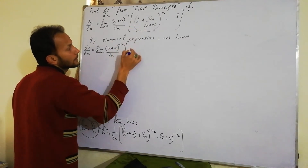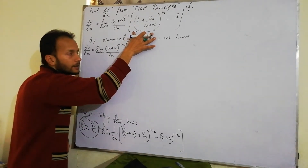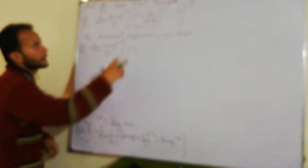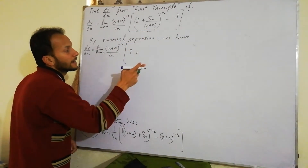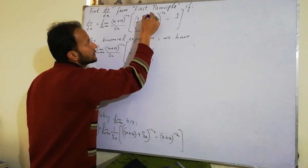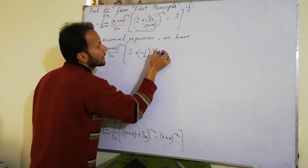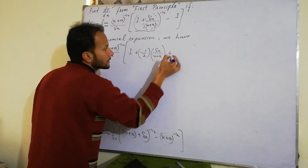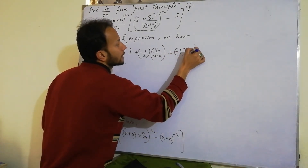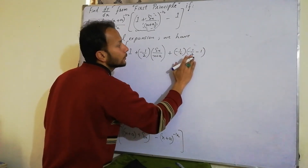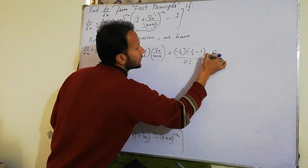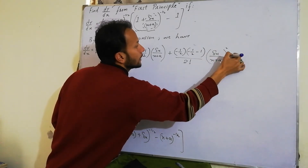Binomial expansion apply karte hain: (1 + u)^n ≈ 1 + nu + n(n-1)/2! * u^2 + ... Yahan n = -1/2 aur u = Δx/(x+a). Toh expansion mein: 1 + (-1/2)(Δx/(x+a)) + [(-1/2)(-1/2 - 1)/2!] * (Δx/(x+a))^2 + ... and so on.